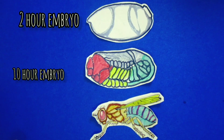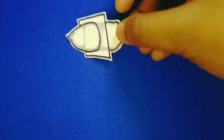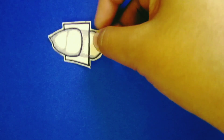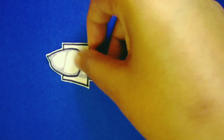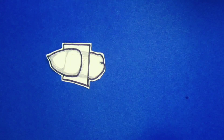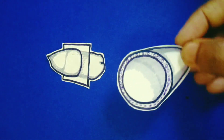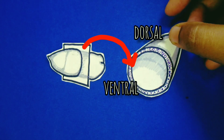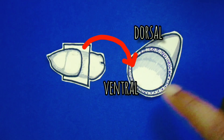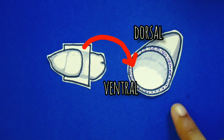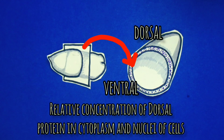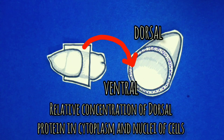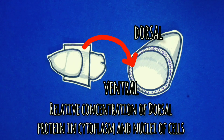In a newly laid egg, the mRNA and protein encoded by the dorsal gene are uniformly distributed throughout the cytoplasm. After the nuclei have migrated to the periphery of the embryo, dorsal protein becomes redistributed. Along one side, dorsal protein remains in the cytoplasm — this side will become the dorsal surface. Along the other side, dorsal protein is taken up into the nuclei — this side will become the ventral surface.